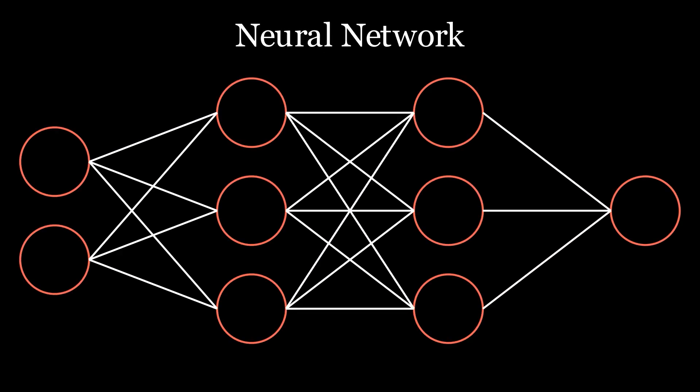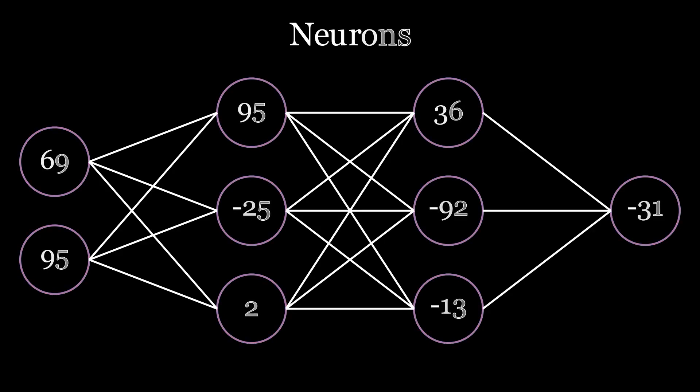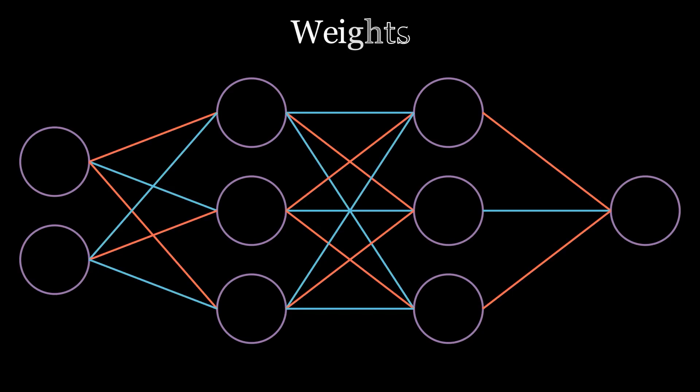This is a neural network. The nodes you see are called neurons. For now, think of them as containers for numbers. Each neuron is connected to another, and every connection has a value corresponding to it. We call that value a weight.